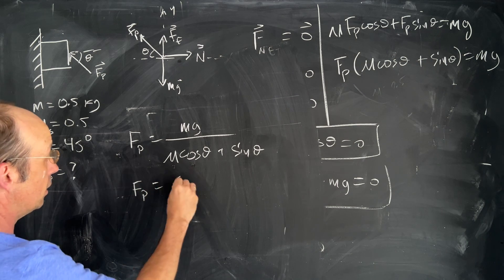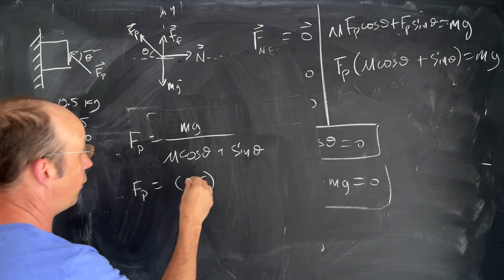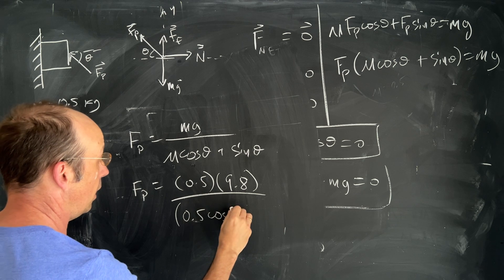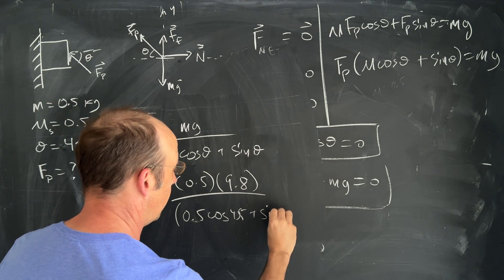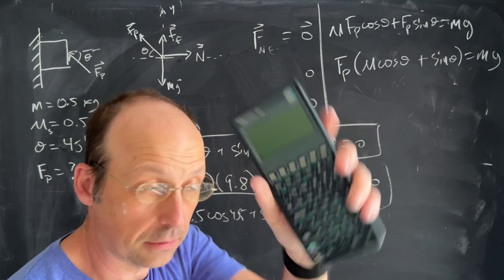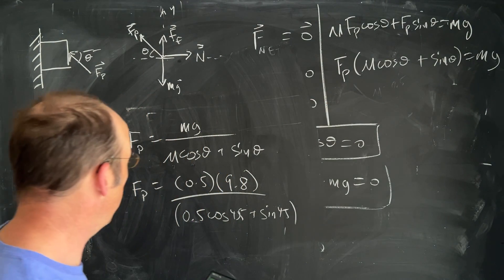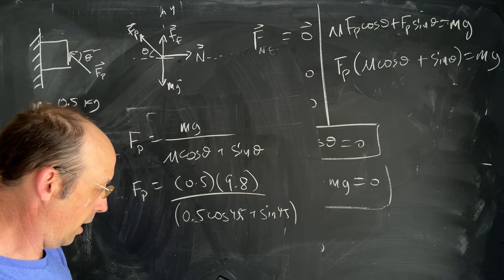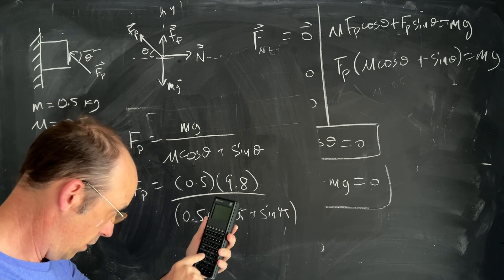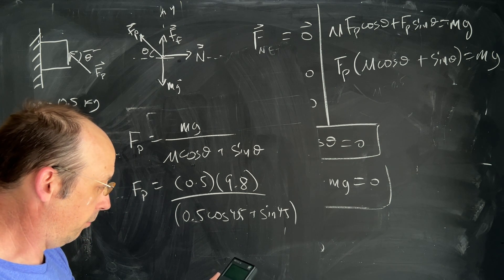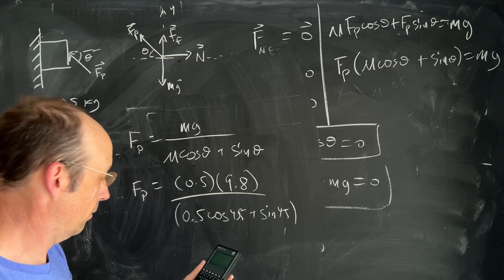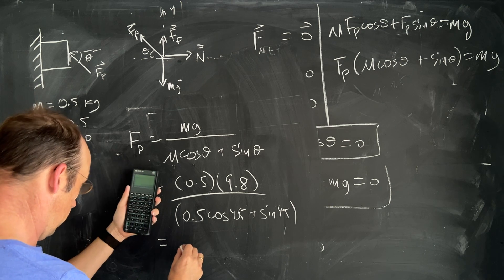Let's just go ahead and put in our values just for fun. fp is the mass I said it was 0.5. I'll leave off the units right here. This is 0.5 times cosine of 45 plus sine of 45 and now I need my calculator. I'm going to use this. 0.5 enter 9.8 times 0.5 enter 45 cosine times 45 plus divided by and I get 4.62.